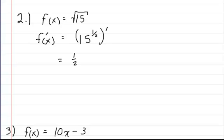So when I do that, I bring down the one half, and I subtract 1 from one half, which ends up giving me one half times 15 to the minus one half.